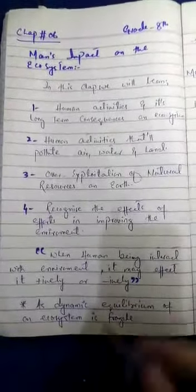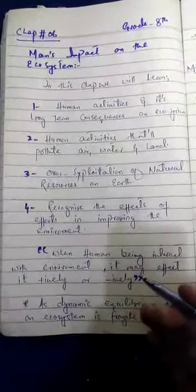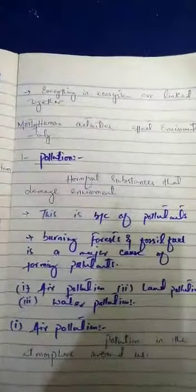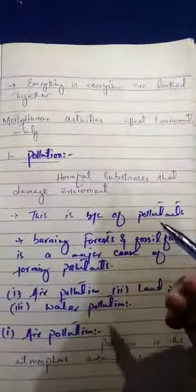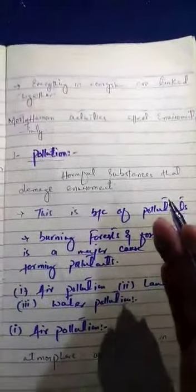A dynamic equilibrium of an ecosystem is so fragile. When ecosystem is disturbed positively or negatively, it will disturb in positive way or negative way. So everything in ecosystem is linked together - one organism is linked to another organism, and one component of an ecosystem.